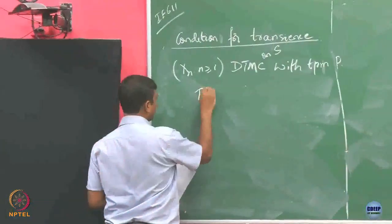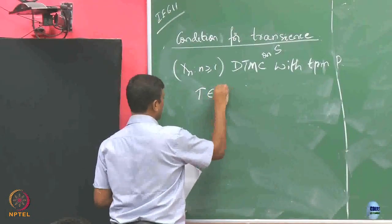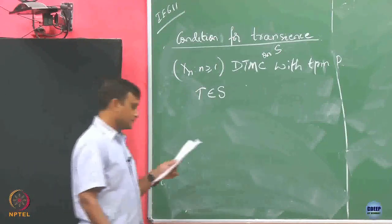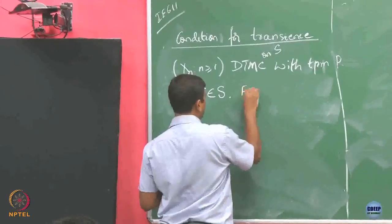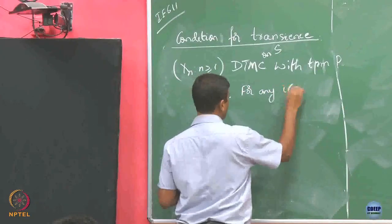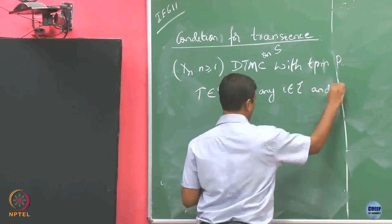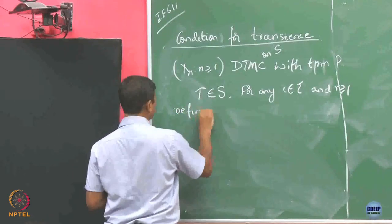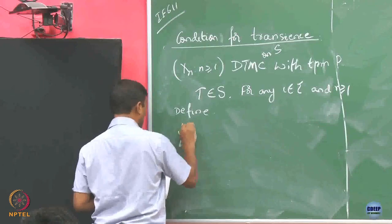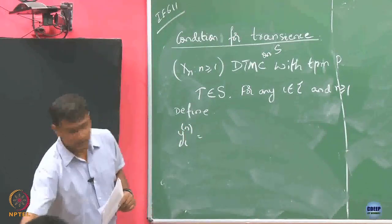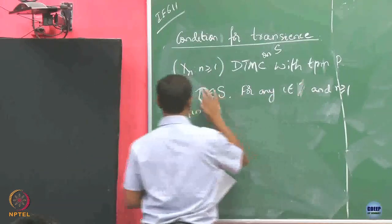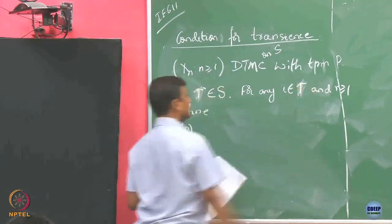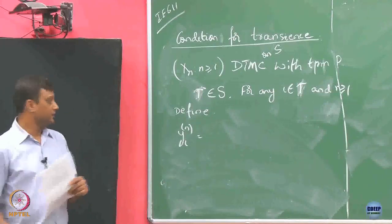Now take a strict subset of this set, call it I. For N greater than or equal to 1, define T. I am going to call this T — this notation is the same as that T.